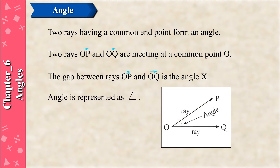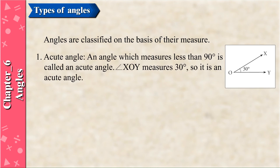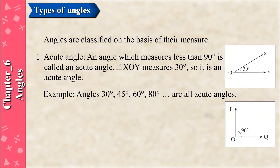Types of Angles: Angles are classified on the basis of their measure. Acute Angle: An angle which measures less than 90 degrees is called an acute angle. Angle XOY measures 30 degrees, so it is an acute angle. Examples: angles 30 degrees, 45 degrees, 60 degrees, 80 degrees, and so on are all acute angles.